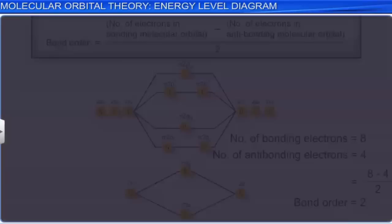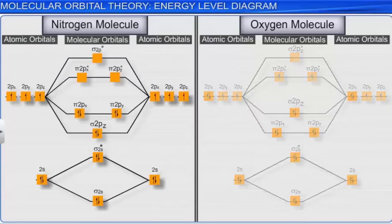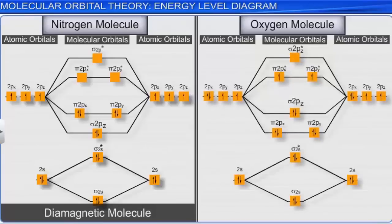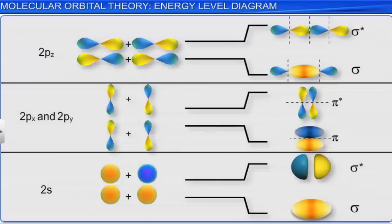When electrons in an atom or molecule are paired, as in nitrogen, they form a diamagnetic atom or molecule. When electrons are not paired, as in oxygen, they form a paramagnetic atom or molecule. In this way, the molecular orbital model helps us understand the structure and properties of molecules.